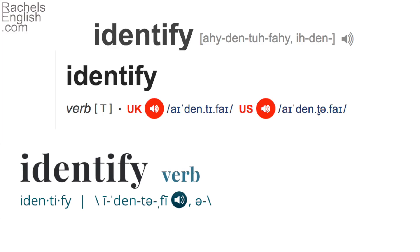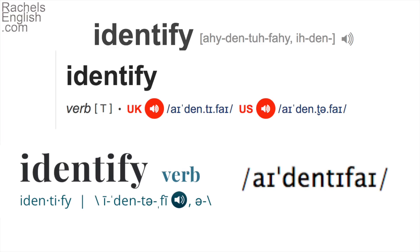Merriam-Webster has yet another different set of sounds. Macmillan looks similar to the Cambridge Dictionary. Both Macmillan and Cambridge use IPA symbols — that is, the International Phonetic Alphabet — to show the pronunciation, and this is what I recommend. It's more standard. I have a playlist to help you learn the symbols and sounds together. Click here or in the description below to see that playlist.